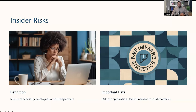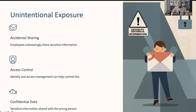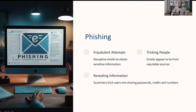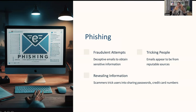According to the 2022 Insider Threat Report, 68% of organizations feel moderately to extremely vulnerable to insider attacks. That's why we have rules like vendor risk management, where you monitor third-party vendors to know how much risk they pose to your business. Next is unintended exposure — this happens when employees unknowingly share sensitive information, something as simple as sending an email with confidential data to the wrong person. Tools like identity and access management can help control this by managing who has access to what information. Also, we have phishing — a particularly sneaky threat involving fraudulent emails that appear to come from reputable sources, tricking people into revealing personal information like passwords or credit card numbers.